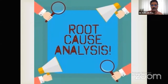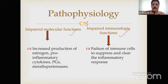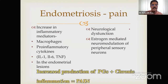To understand endometriosis, you need a little pathophysiology — I won't go into all the details. There is an impaired molecular function, which means increased production of estrogen and pro-inflammatory markers like cytokines, prostaglandins, and metalloproteins. On the other side, there is an impaired immunological function — a failure of immune cells to suppress and clear the inflammatory response.